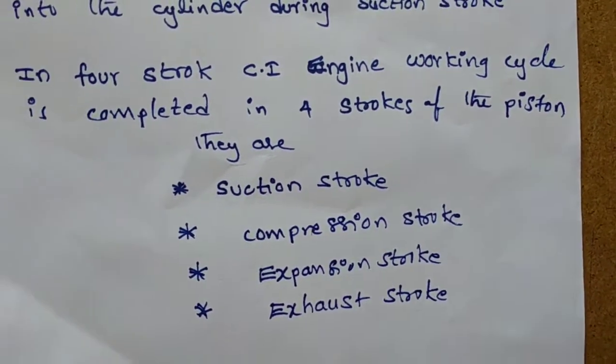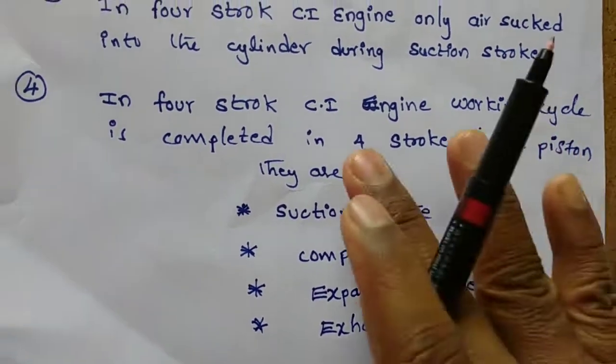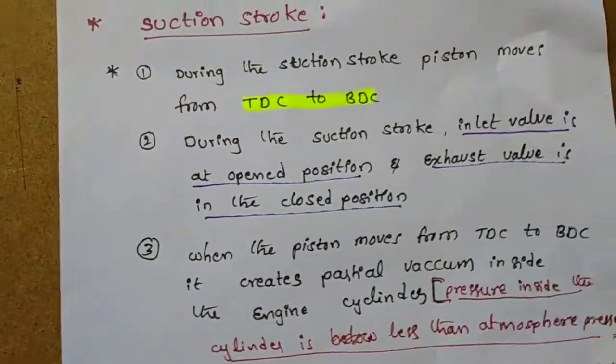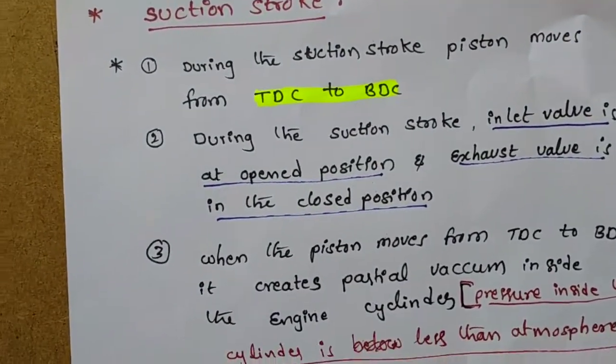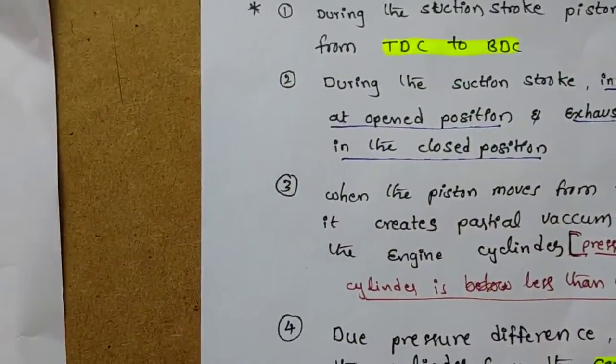The first stroke is the suction stroke. During the suction stroke, the piston moves from TDC to BDC. Before the engine starts, the piston will be at the top dead center position. During the suction stroke, the inlet valve will be in the opened position and the exhaust valve will be in the closed position.